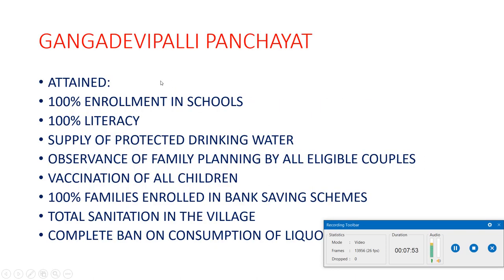Here is the case study of Ganga Devi Palli village panchayat. The Sarpanch of this village did untiring work in attaining 100% enrollment in schools, 100% literacy rate, supply of protected drinking water, observance of family planning by all eligible couples, vaccination of all children, 100% families enrolled in bank saving schemes, total sanitation in the village, and a complete ban on consumption of liquor in the village — for which they are receiving great acknowledgement.